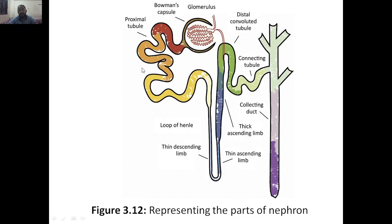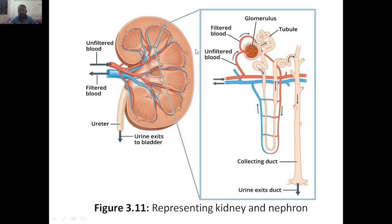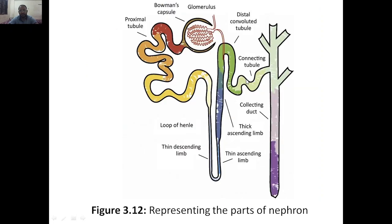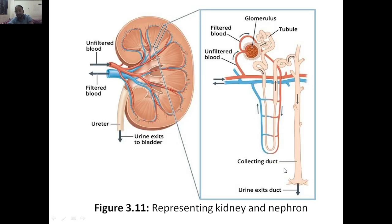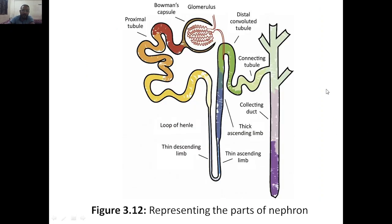The glomerulus is present inside the Bowman's capsule. You can see this is the Bowman's capsule — we are talking about this whole system. Next we have the distal convoluted tubule. These are the tubule structures, and this is the connecting tubule. Then the collecting duct — finally it will go to the collecting duct, as we saw, and then to urine formation. Those are the parts of the nephron.